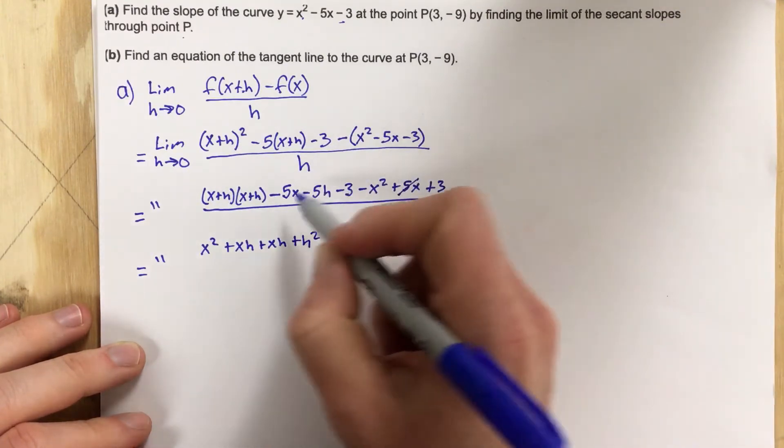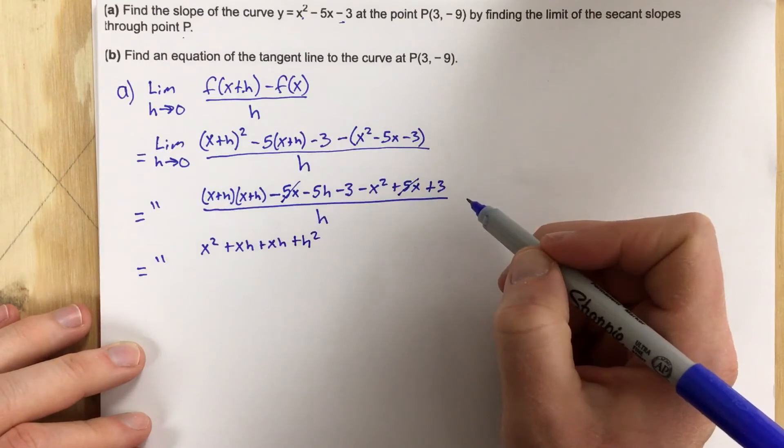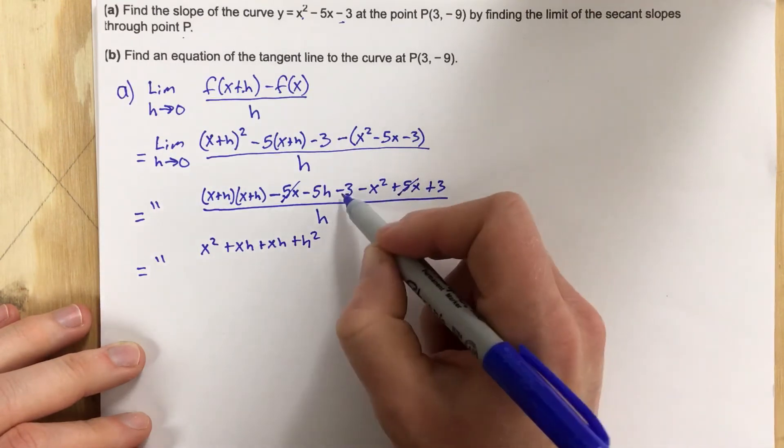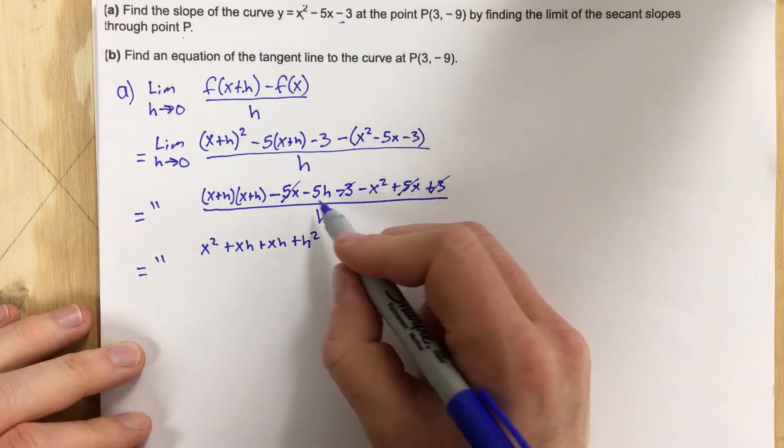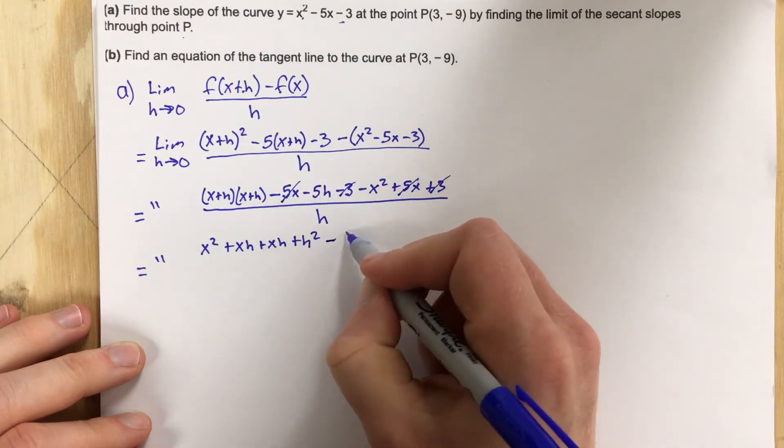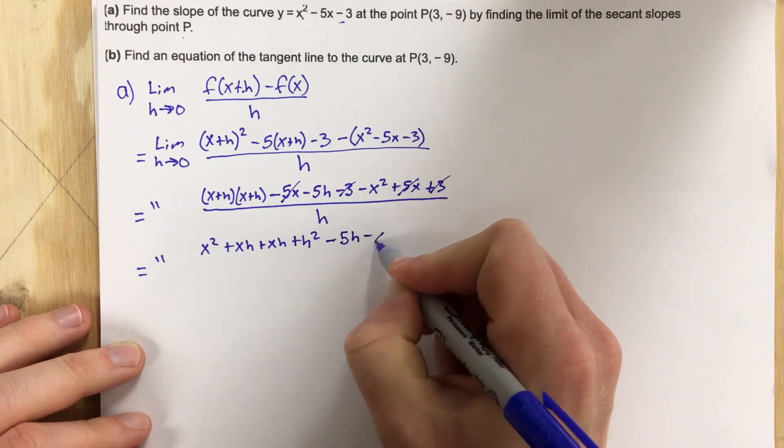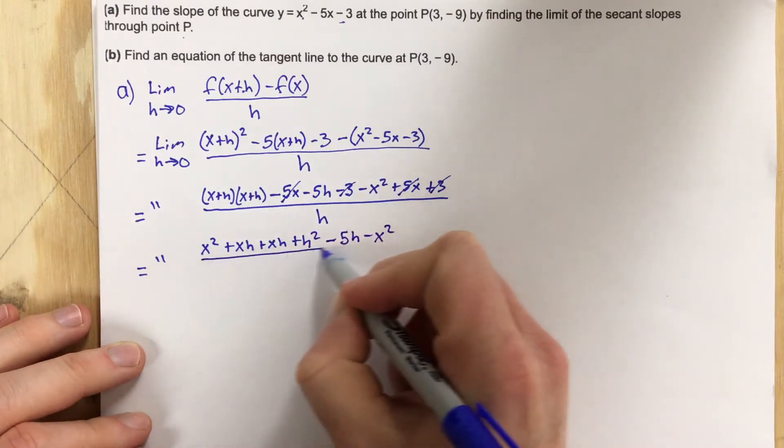The -5x and the 5x cancel, so I don't have to write those. The -3 and the 3 cancel, I don't have to write those. And I end up with minus 5h minus x squared all over h.